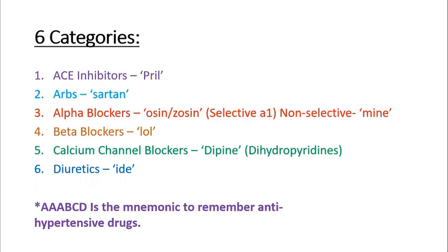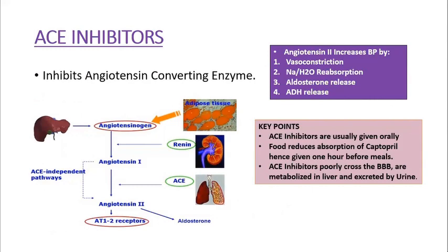Now we're going to discuss these one by one. If you remember from physiology, the liver makes angiotensinogen, then renin converts it to angiotensin-1, and then ACE acts to convert it into angiotensin-2. But we are inhibiting ACE here. So if there is no ACE, there is no angiotensin-2. Angiotensin-2 increases blood pressure by vasoconstriction, salt and water reabsorption, aldosterone release, and ADH release. When ACE is inhibited, these four factors are blocked, so there won't be any increase in blood pressure — and that is our goal for hypertension.